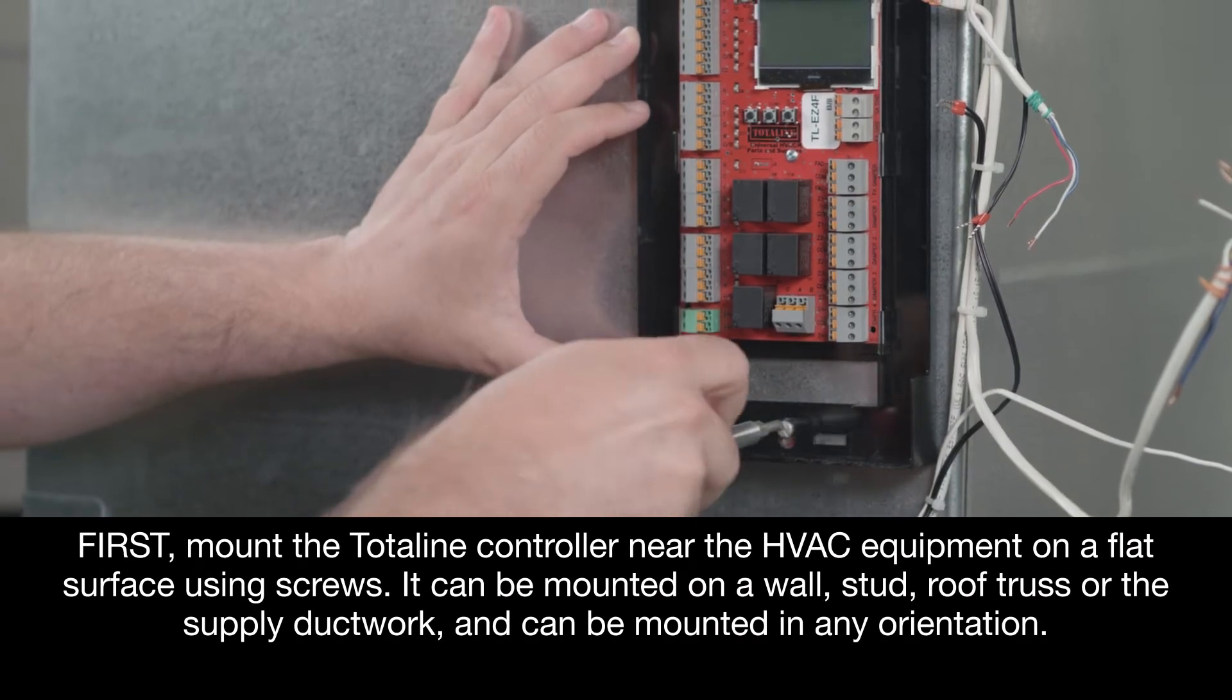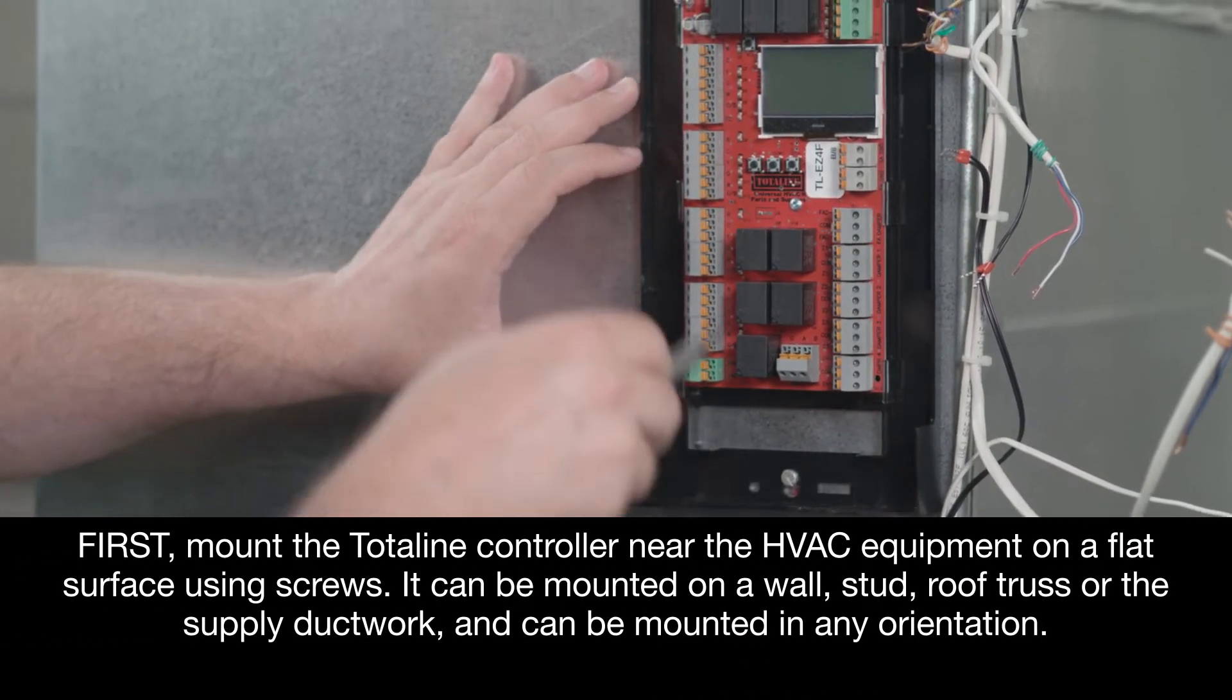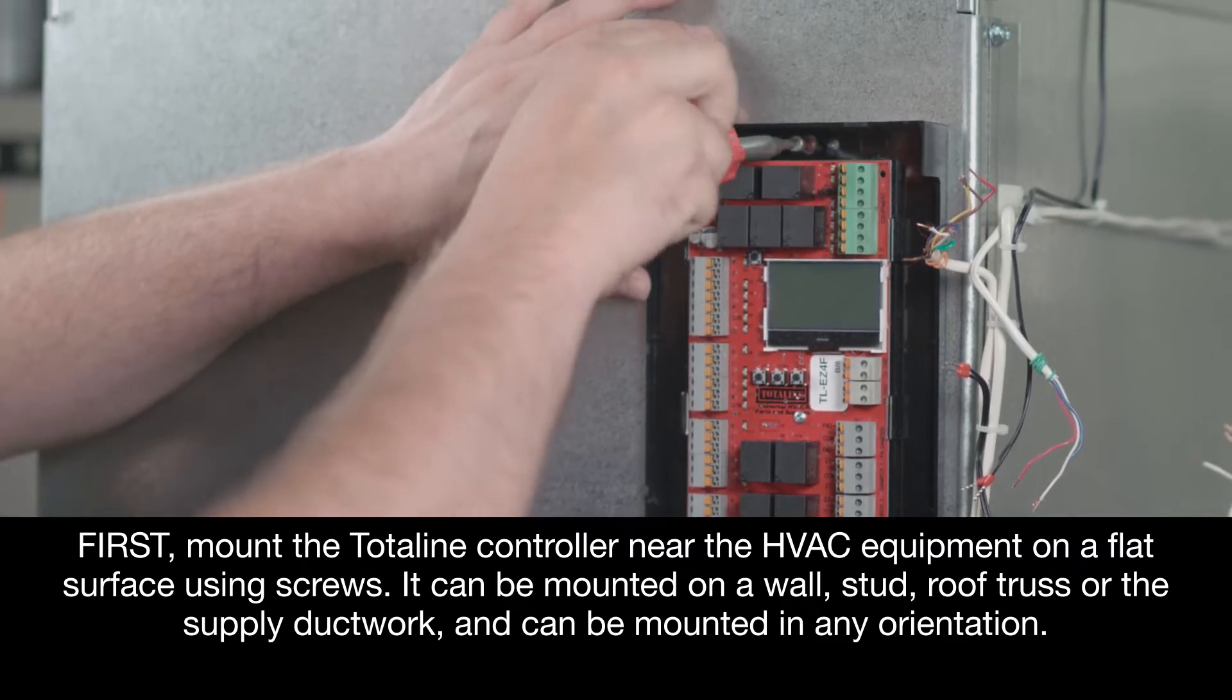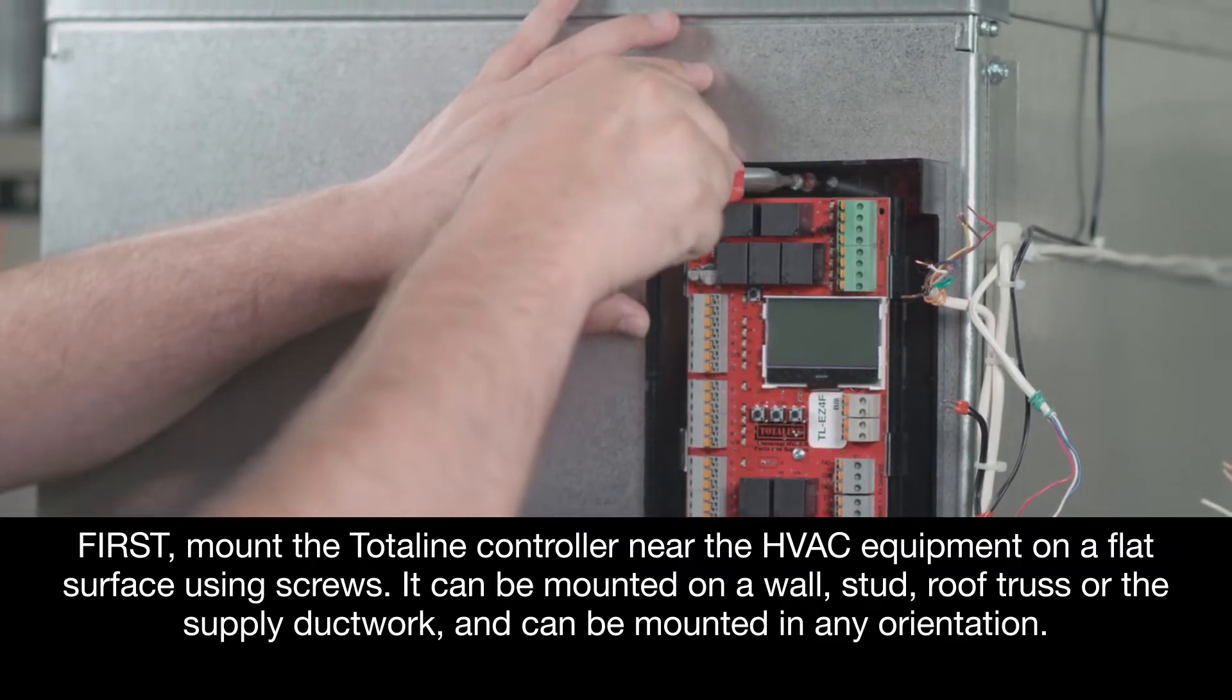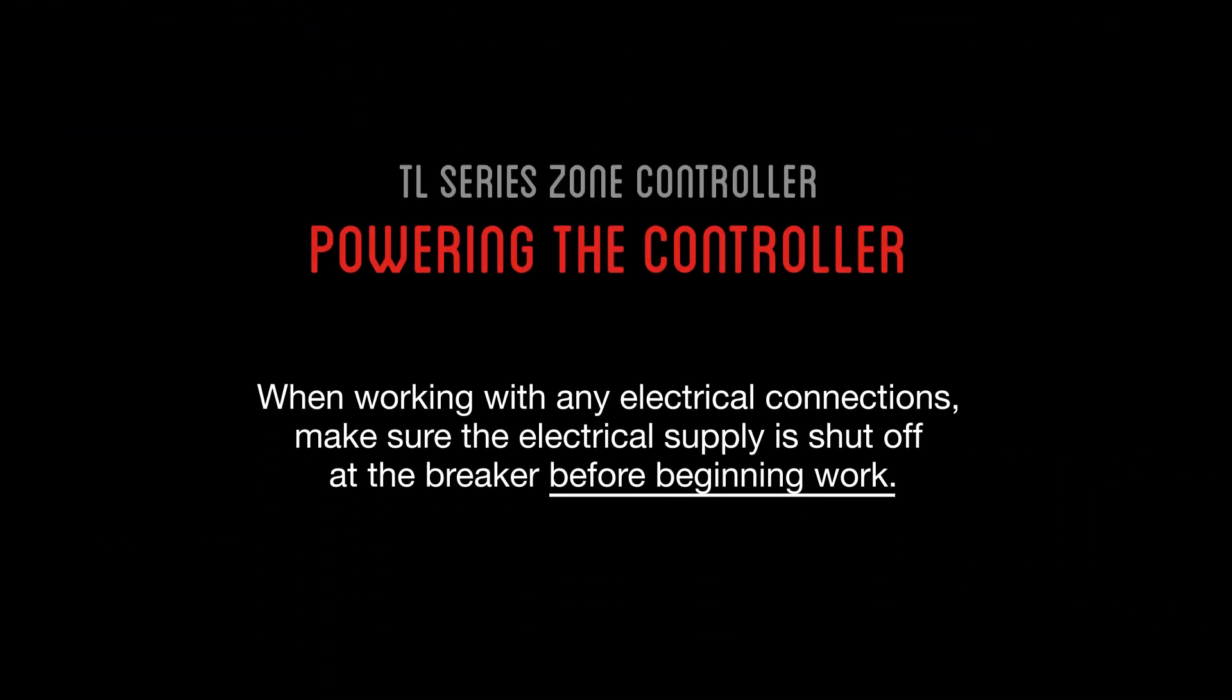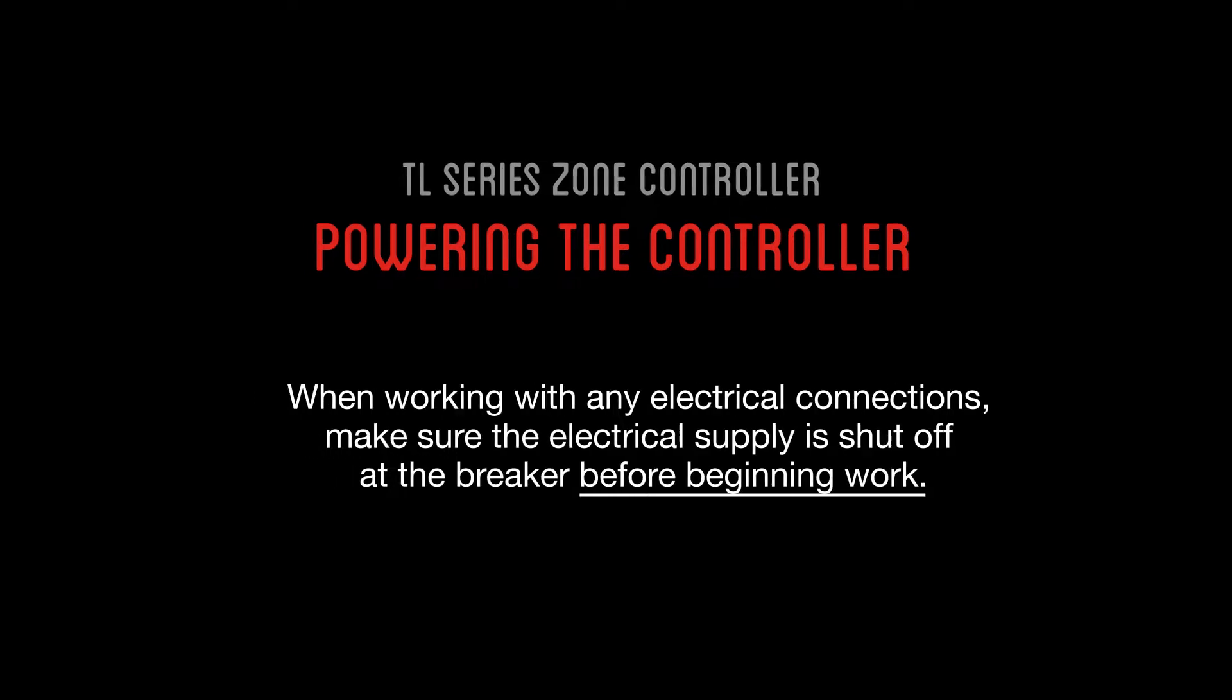First, mount the TotalLine controller near the HVAC equipment on a flat surface using screws. It can be mounted on a wall, stud, roof truss, or the supply ductwork and can be mounted in any orientation. When working with any electrical connections, please make sure the electrical supply is shut off at the breaker before beginning work.